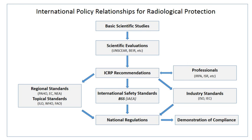A number of commonly used detection instrument types are used for both fixed and survey monitoring, including ionization chambers, proportional counters, Geiger counters, semiconductor detectors, scintillation detectors, and airborne particulate radioactivity monitors.